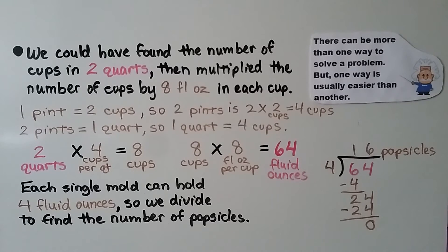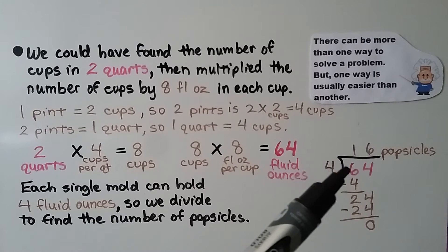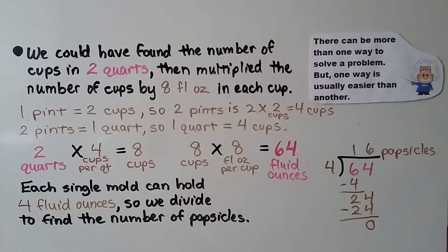And each single mold can hold four fluid ounces. So we divide to find the number of popsicles. Four fits into 64 16 times. She can make 16 popsicles.